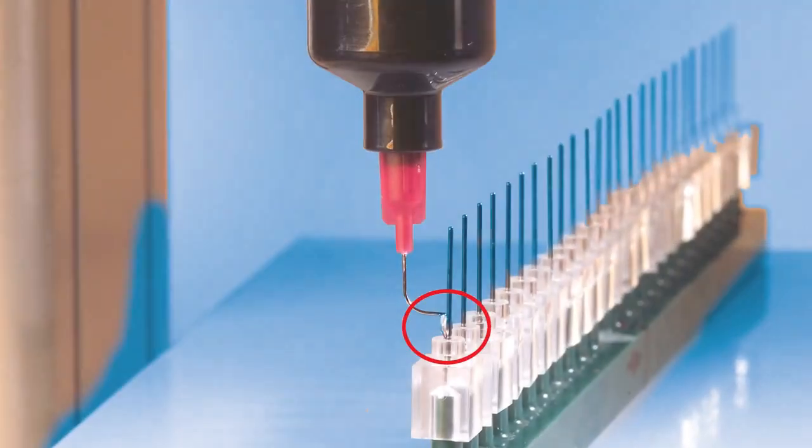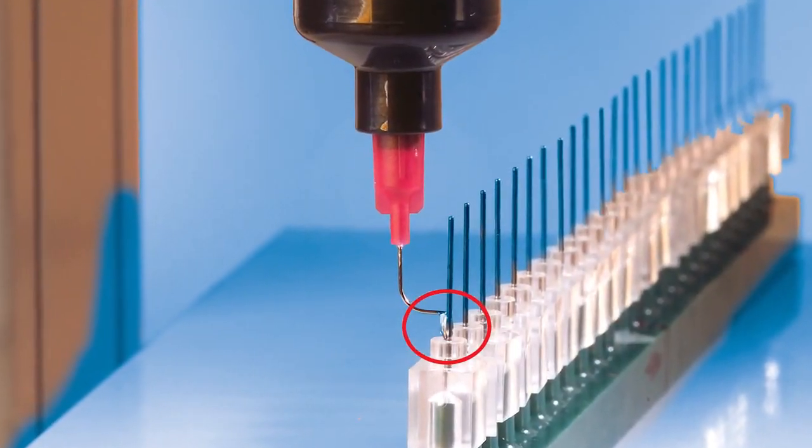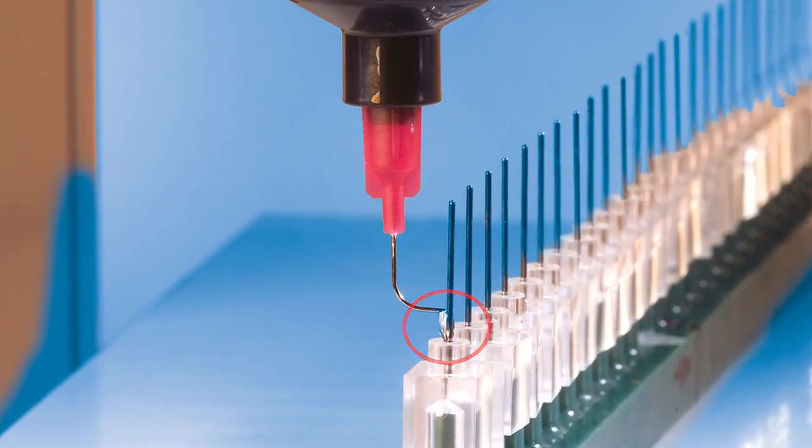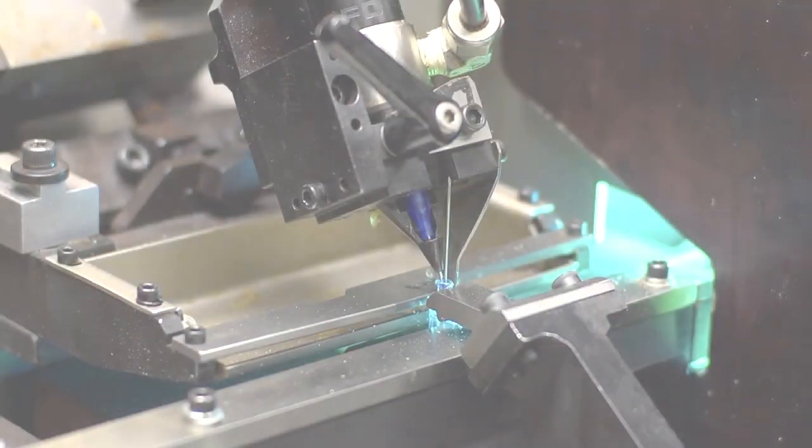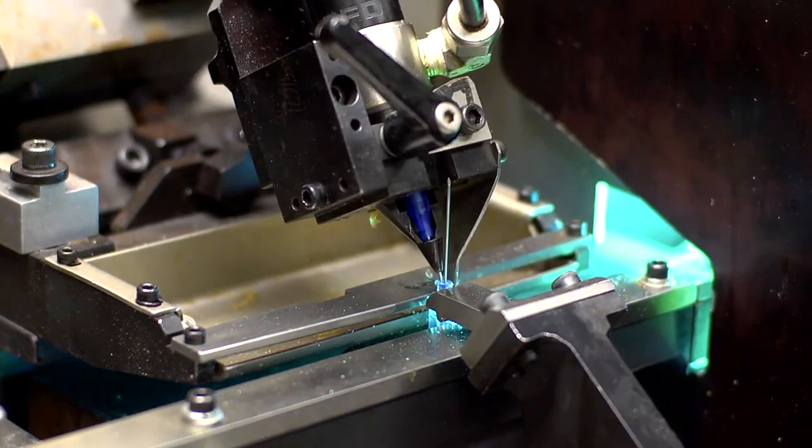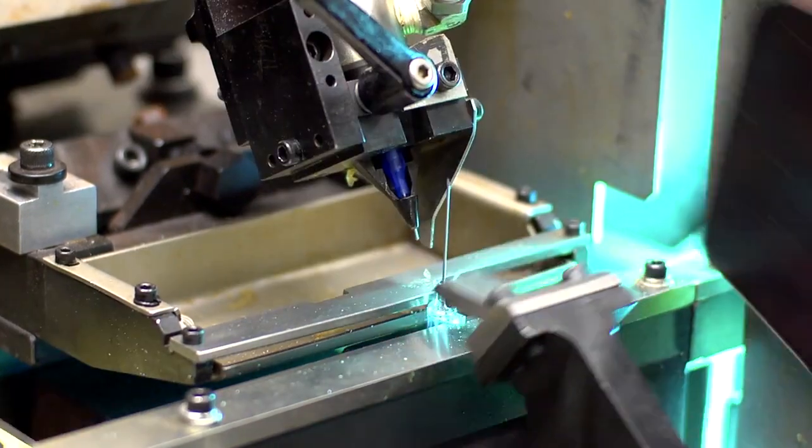It is critical that this joint is well sealed to prevent fluid such as blood or medicine from leaking. Henkel's light cure adhesives provide the highest needle assembly throughput due to their rapid cure.